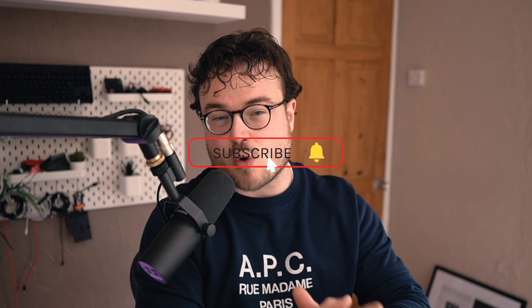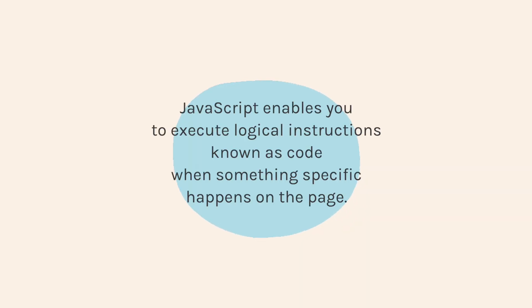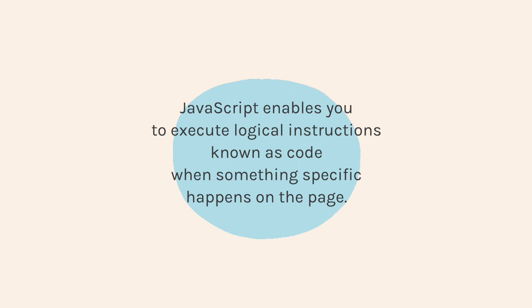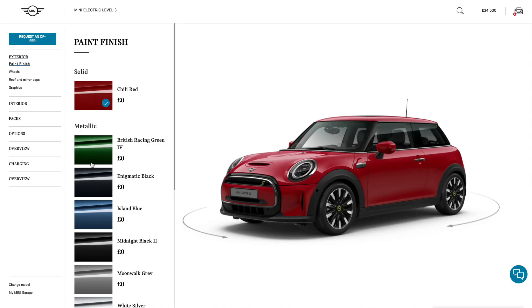Another very important part of front-end web development is interactivity. For example, now you've got the button on the page exactly where you want it — what is going to happen when the user presses it? We express these logical instructions using code, and the coding language we use on the web is JavaScript. The most advanced web developers code up components using a combination of HTML, CSS, and JavaScript to build things like a seat-picker interface at the theater or a configurator for a brand new Mini Cooper. These experiences make the web better for users and directly generate revenue for businesses — which is one of the reasons why web developers are paid so well.